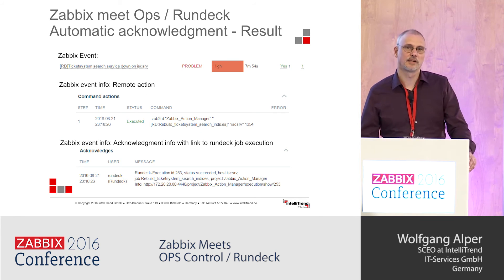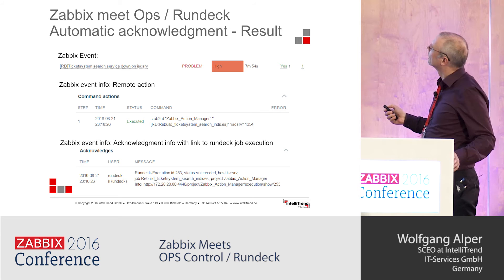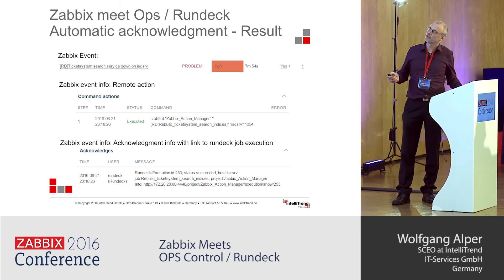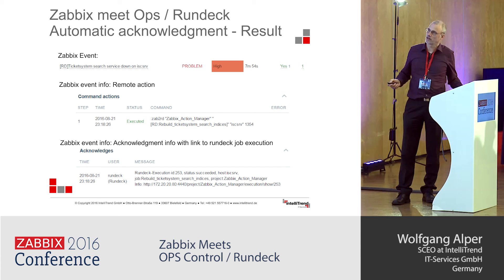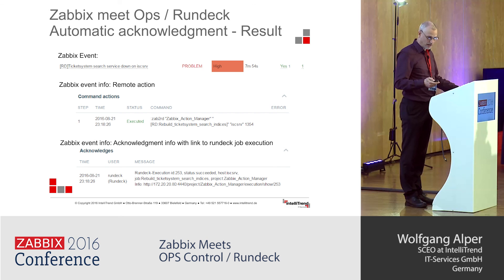Doing so results in this: we have our Zabbix event with two clickable links. Clicking them shows the Zabbix event info and our Rundeck action. You can see the trigger description part, the event ID, the host name, and the acknowledgement — acknowledged by the user "Rundeck" — giving you execution context 2.53 which can be looked up in Rundeck. The status shows "succeeded", the host, etc. It also gives you the full link to click directly to see the log output and the result of our Rundeck operation.